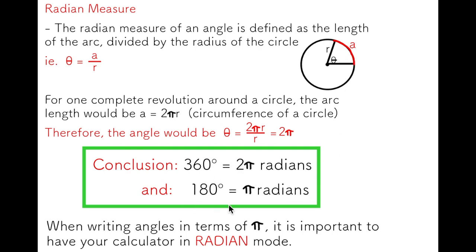From there, I can develop the idea that 180 degrees is π radians. These are two very key concepts you'll use throughout our studies of trigonometry. Very important when you're writing angles in terms of π, it's important to have your calculator in radian mode.